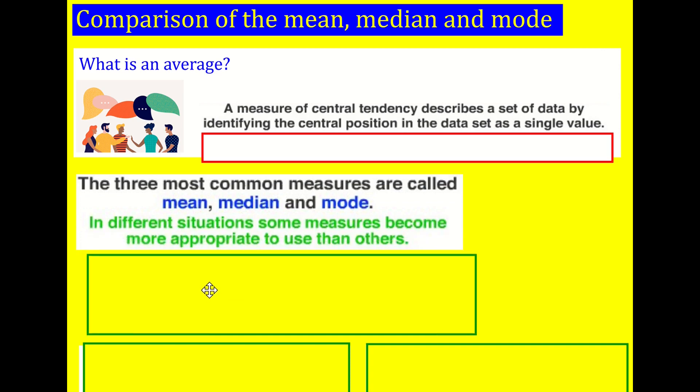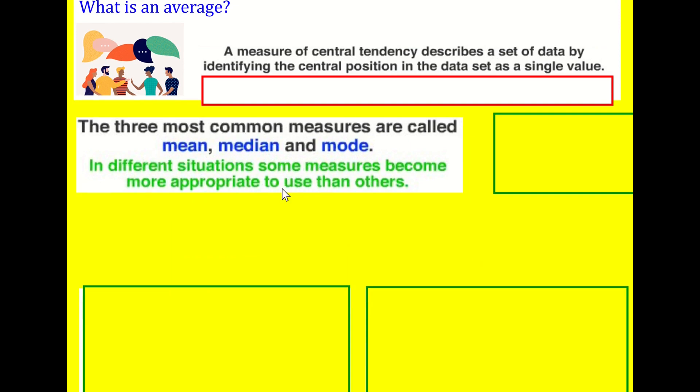And the three most common measures that you may well have heard of before are the mean, median, and mode. And in different situations, some of them become more appropriate than in others. But in fact, there are other ones which I'll come back to, so I just want to test you on these for the moment.